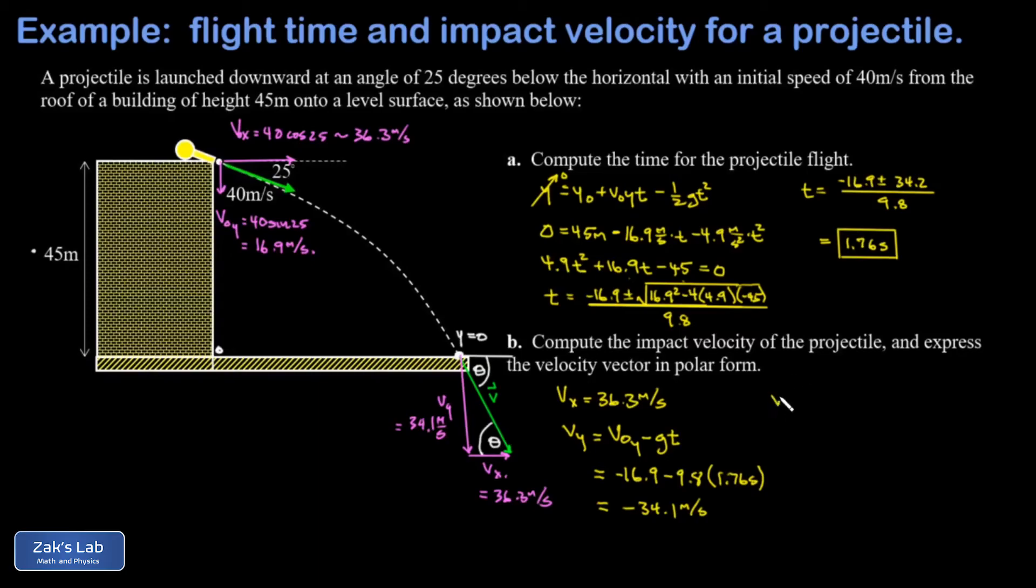I'll wrap things up by getting the magnitude of the impact velocity using the Pythagorean theorem - that's the square root of 34.1 squared plus 36.3 squared, and that gives me approximately 49.8 meters per second.